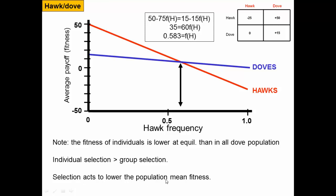This is another example where individual-level selection beats out group-level selection. The best thing for the group would be for all organisms to use the dove strategy, giving everyone higher fitness. But individual-level selection drives the population toward this equilibrium point where everybody has lower fitness than they would if they were all doves. Selection actually acts to lower the population mean fitness — a really interesting result.